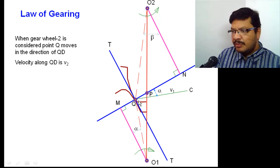For gear wheel 2, the point Q moves in a direction perpendicular to O2Q. That direction I am calling as along QD. And velocity is V2, the linear velocity of this gear wheel 2. Then, this angle is beta. Here, this angle is beta. Then, automatically this angle will become beta.